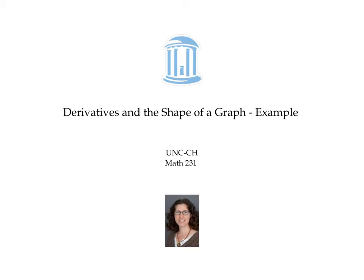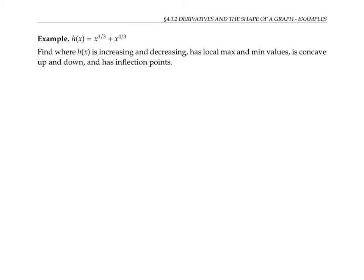In this video, I'll work through an example of using the first and second derivatives of a function to find features of its graph. The function I want to work with is h of x, which is equal to x to the one third plus x to the four thirds. This function is defined for all real numbers. I want to find where the function is increasing and decreasing, where it has local max and min values, where it's concave up and down, and where it has inflection points.